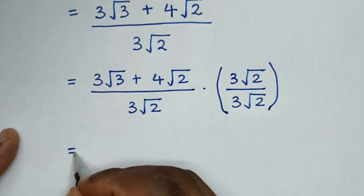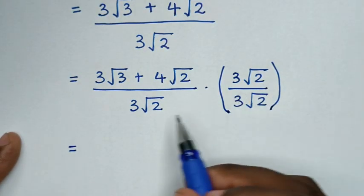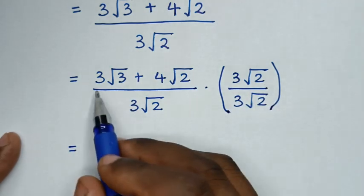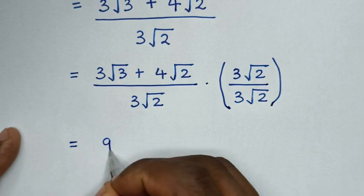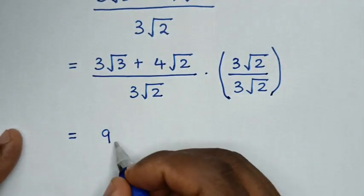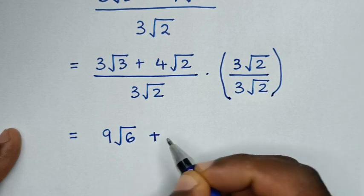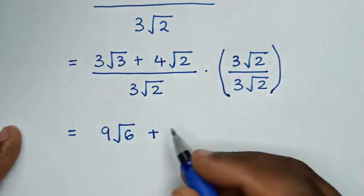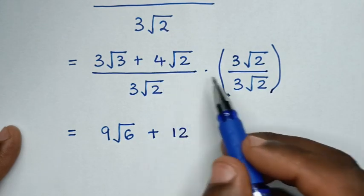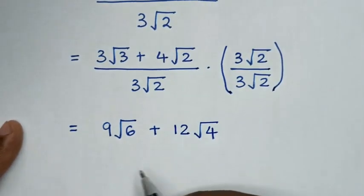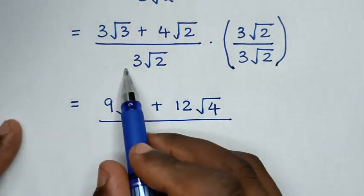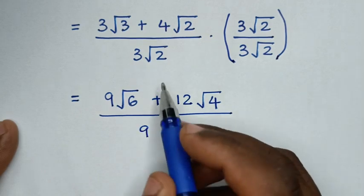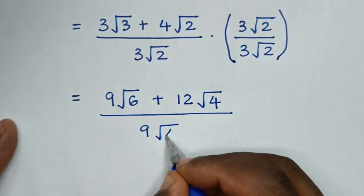Then it will be equal to: 3 square root of 3 times 3 square root of 2 is 9 square root of 6, plus 4 square root of 2 times 3 square root of 2 is 12, and square root of 2 times square root of 2 is square root of 4. Then over 3 square root of 2 times square root of 2, which is 9 times square root of 4.